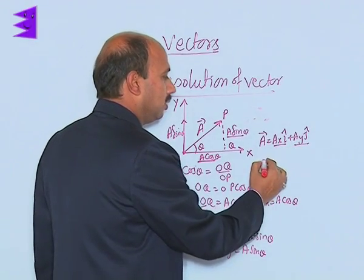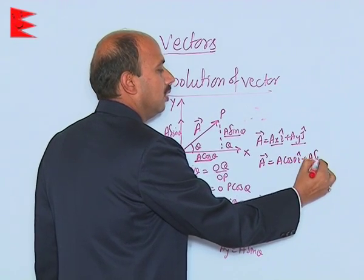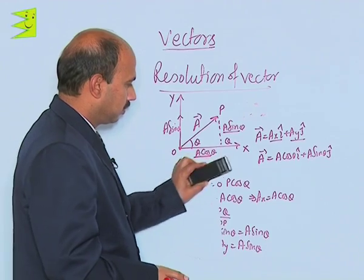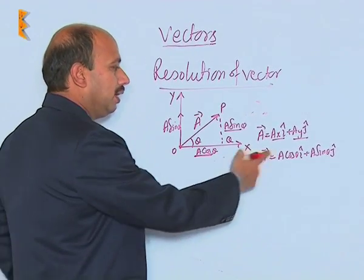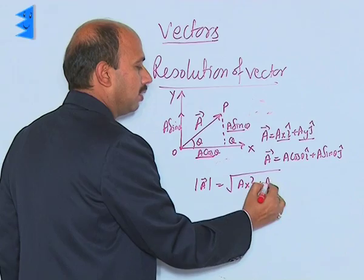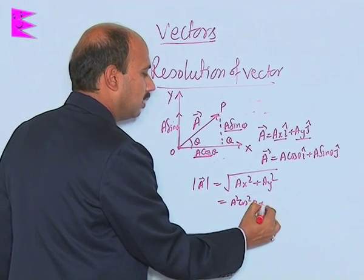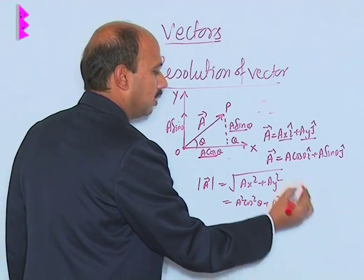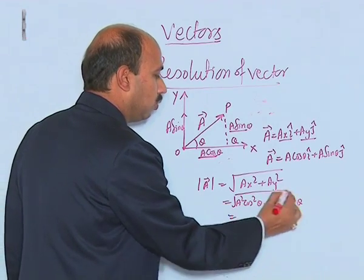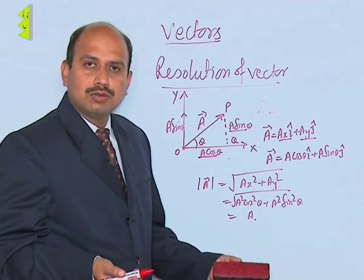So now you can write A is equal to A cos theta î cap plus A sin theta ĵ cap. You can also take its magnitude. The modulus of vector A is equal to the square root of Ax squared plus Ay squared. That gives A squared cos squared theta plus A squared sin squared theta, which simplifies to simply A. So if you solve it, you get the magnitude equal to A — splitting the vector does not affect the magnitude.